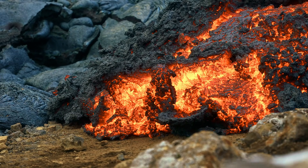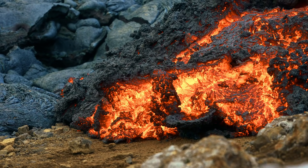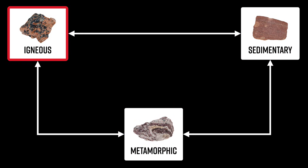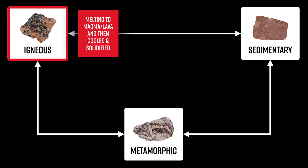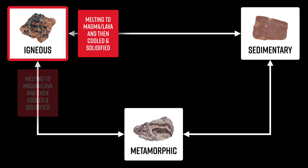How long the magma or lava took to cool off determines those characteristics. In the grand scheme of our rock cycle, it's important to know that if any sedimentary rock is exposed to heat such that it melts into magma or lava and then cools and solidifies, we can get an igneous rock. The same is true of metamorphic rocks — they can melt into magma or lava and then cool and solidify to become igneous.